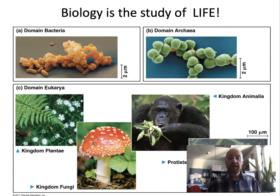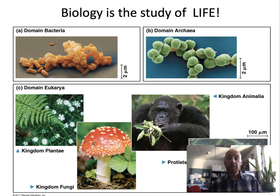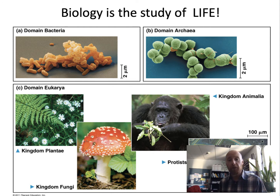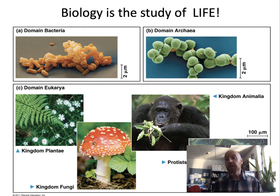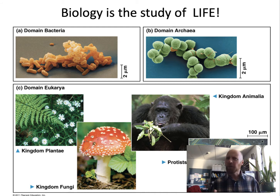The domain Eukarya is broken up into plants, fungi, animals, and protists. Plants get their food by photosynthesis; animals get their food by ingesting and digesting it internally; fungi get their food by decomposing organic material outside of their body before taking it in. Protists are an artificial grouping of everything else, including algae, amoebas, and many other groups.